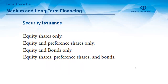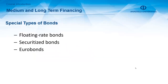For security issuance, we can talk about four kinds of decisions: equity shares only; equity and preference shares only; equity and bonds only; and equity shares, preference shares, and bonds altogether. Companies need to find an optimal point for themselves, as each company has a different optimal structure. Each financial manager needs to concentrate on the needs of the company.